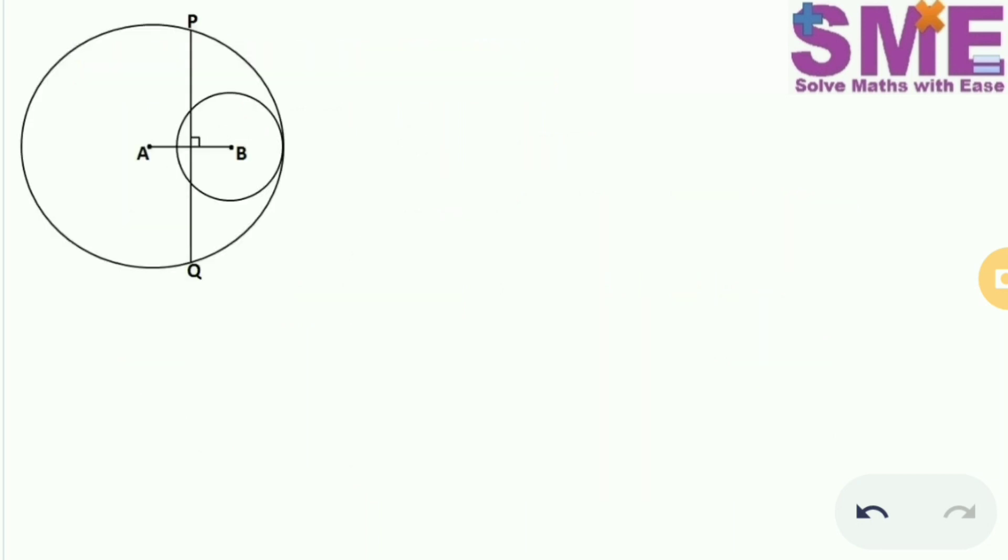So, in this figure what we will do first is, we will mark this point where the bisector PQ intersects the line segment AB as C, and we will extend this line AB to meet at the point where these two circles touch each other.